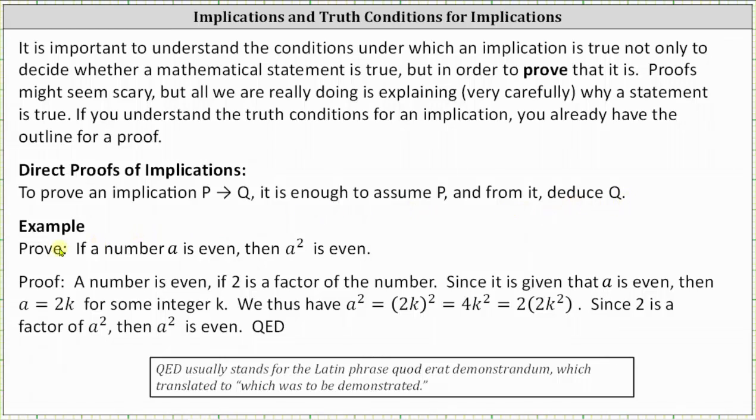As an example, let's prove: if a number a is even, then a² is even. For the proof, a number is even if 2 is a factor of the number. Since it is given that a is even, then a = 2k for some integer k.